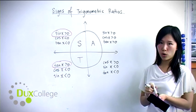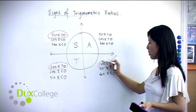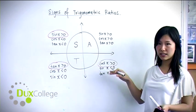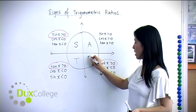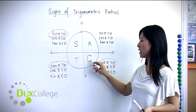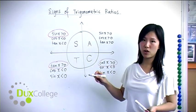In the fourth quadrant, only the cosine ratio is positive, and both sine and tangent ratios are negative, so we label this as C, which means in this quadrant only the cosine ratio is positive.